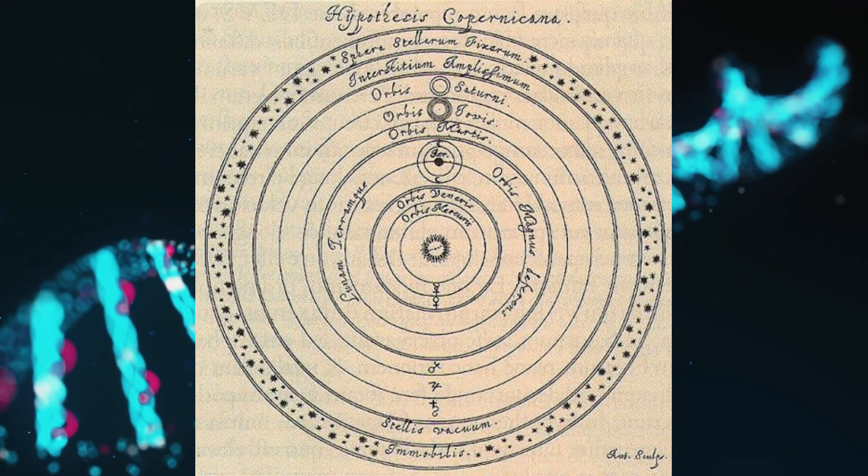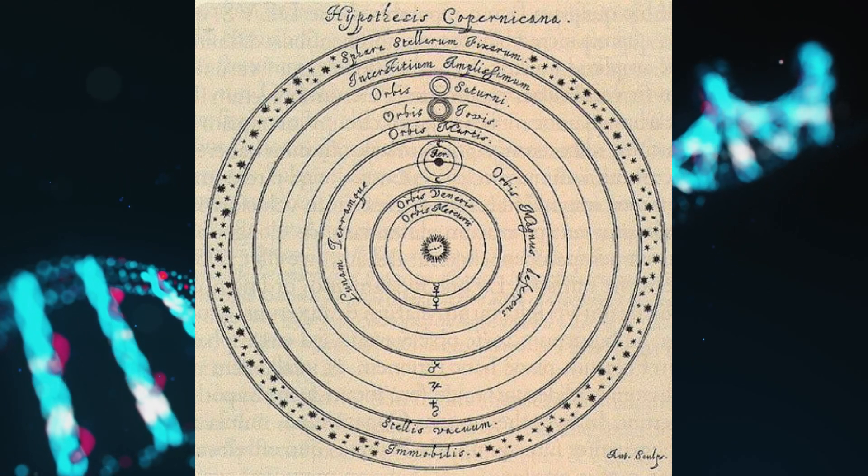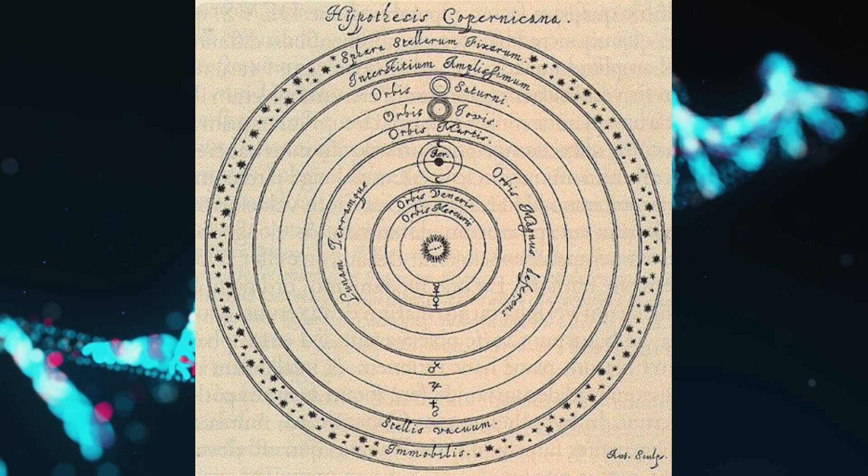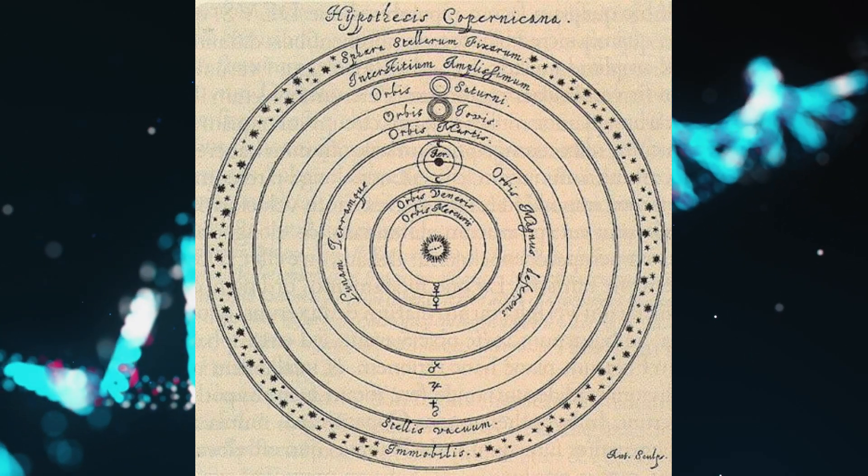Newtonian cosmology. With the work of Isaac Newton in the 17th century, cosmology took a scientific turn, using mathematics and physics to understand celestial mechanics.